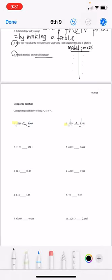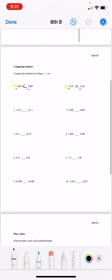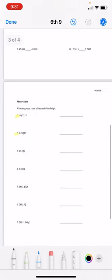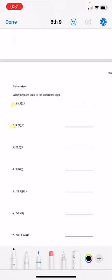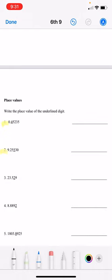Okay. Hopefully you guys are familiar with less than, greater than, or equal to. So, go ahead and finish this page. And then let's move on to place values. Write the place value of the underlying digit. Okay. So let's review.